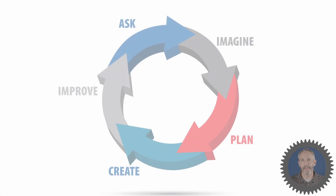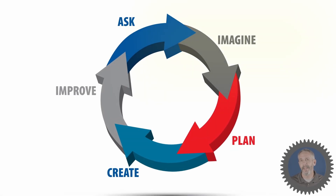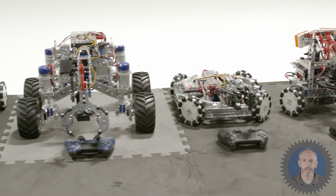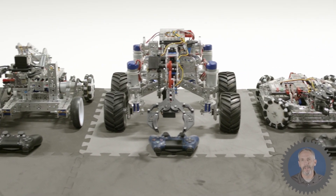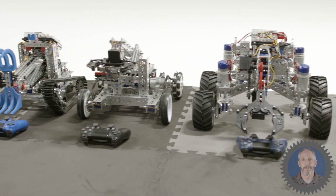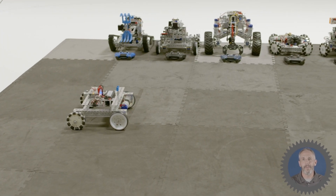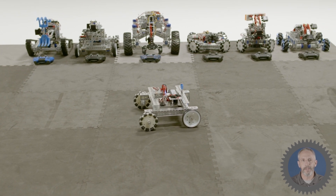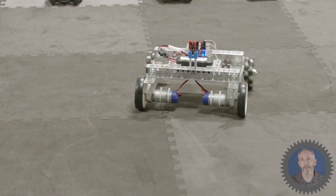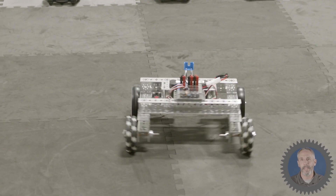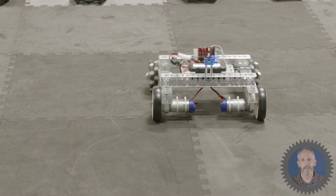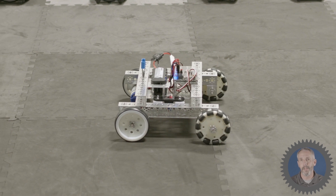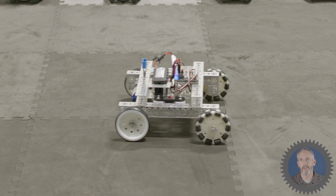Once we've got some initial answers to our driving questions, we can start imagining solutions to our robot design problem. This first robot has a very common two-wheel drive system called a direct drive. In a direct drive, two motors power the two drive wheels individually. Those two motors help determine the robot's speed and direction by how fast the motors turn and the direction they turn — clockwise or counterclockwise.